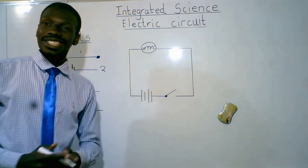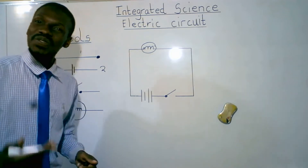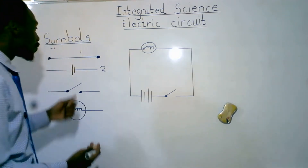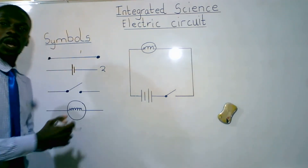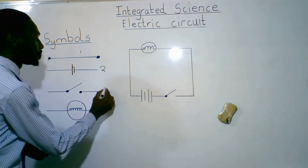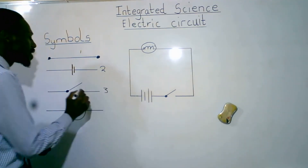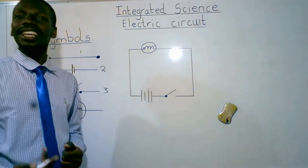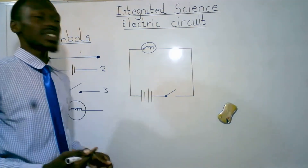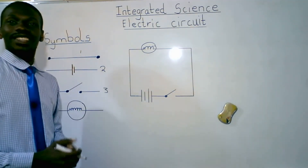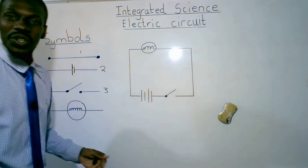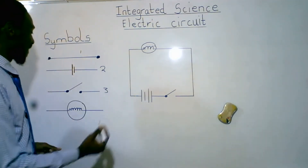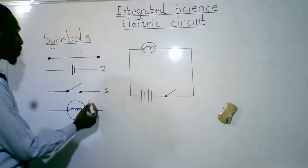When it is one, it is known as a cell. When there are two or more, we are calling them to be a battery. Apart from a cell, we've got a switch. This one is a switch. The function of a switch is to open and close the circuit.